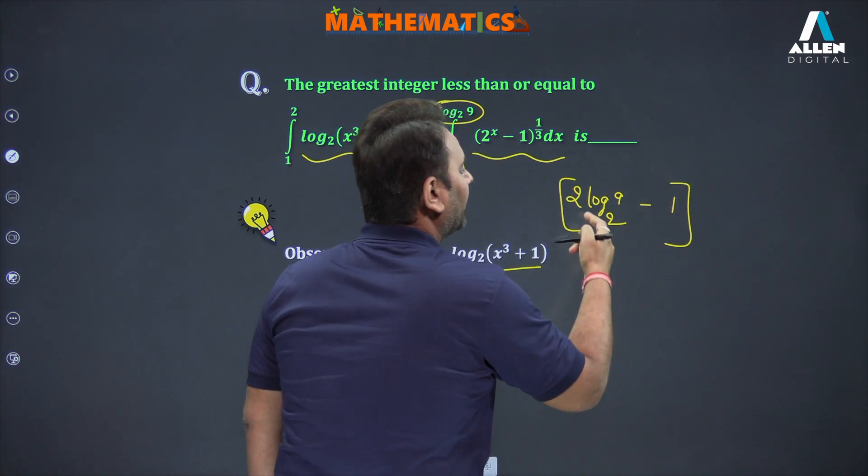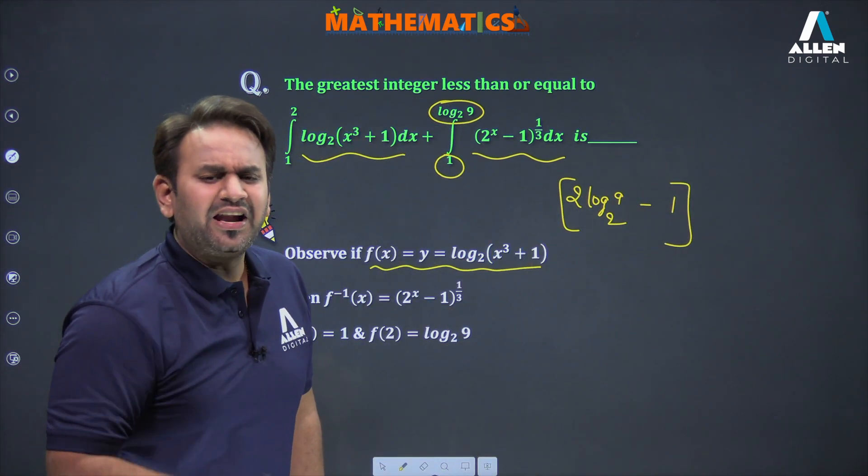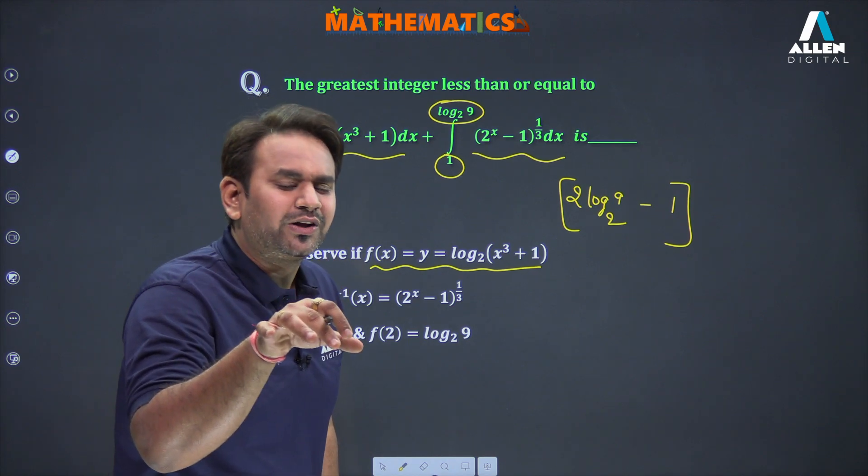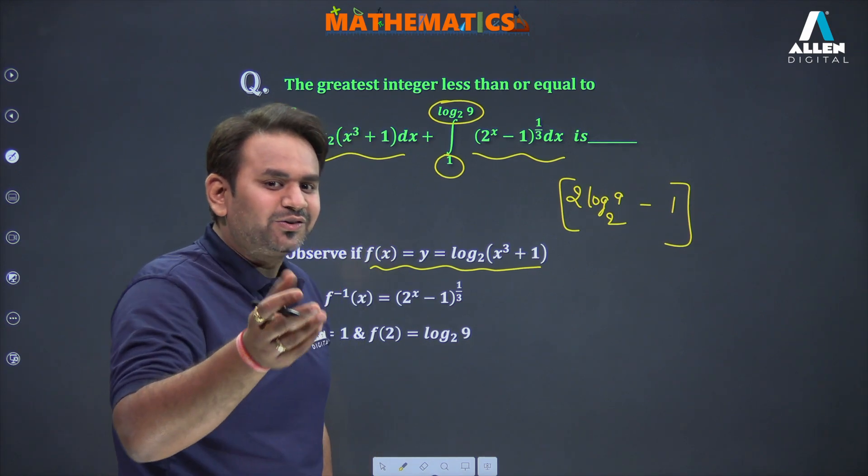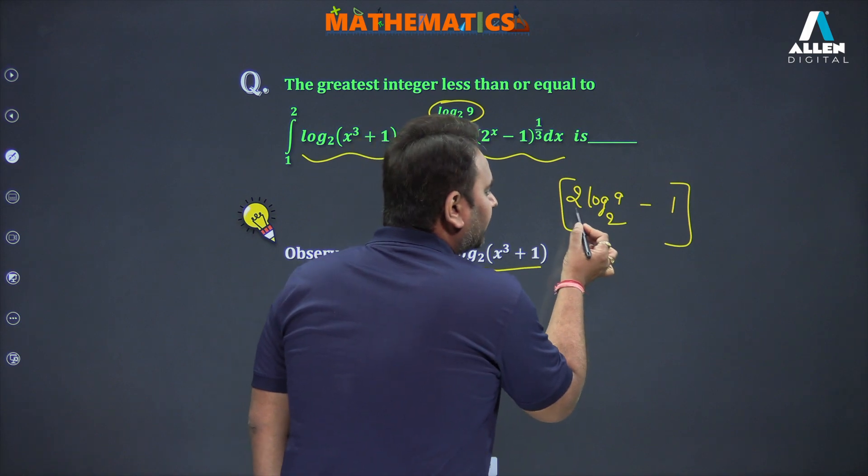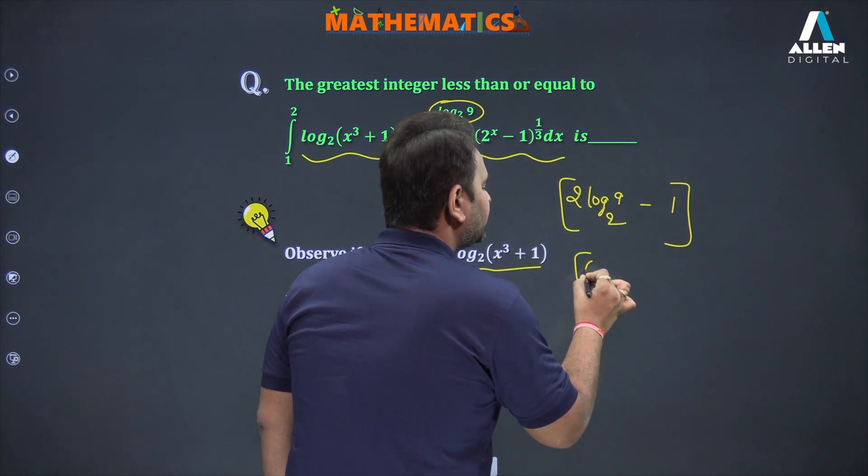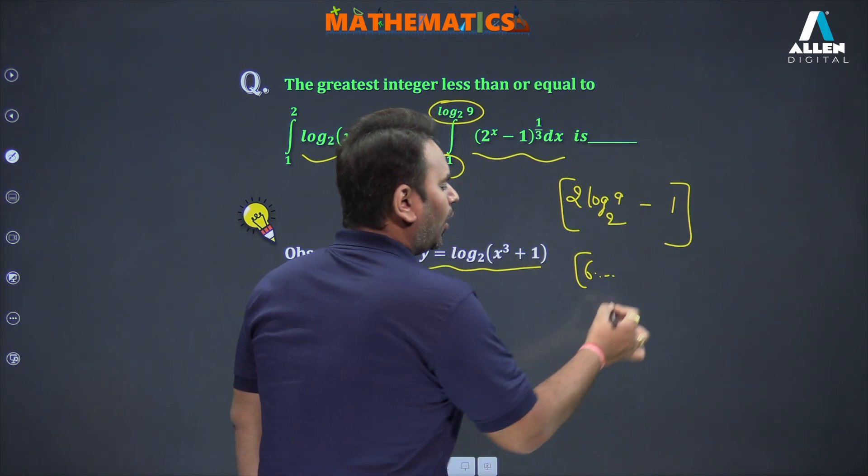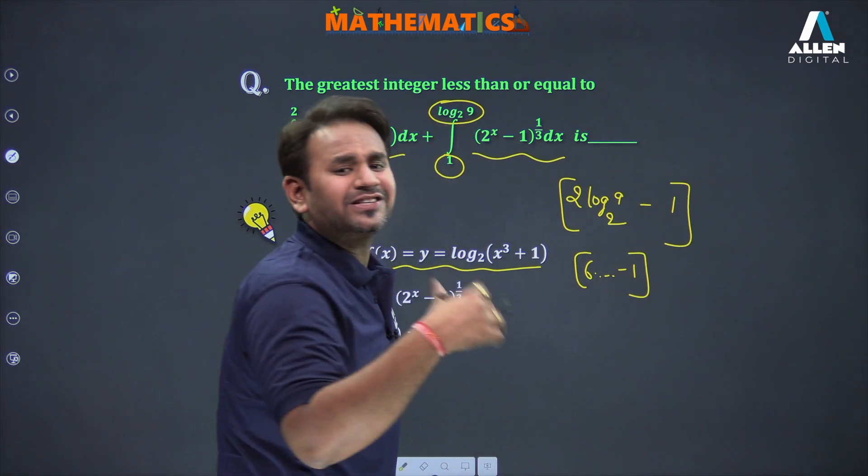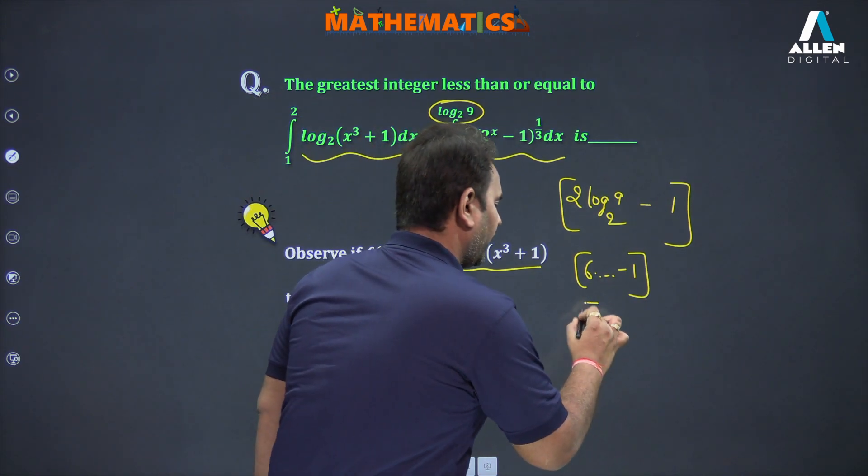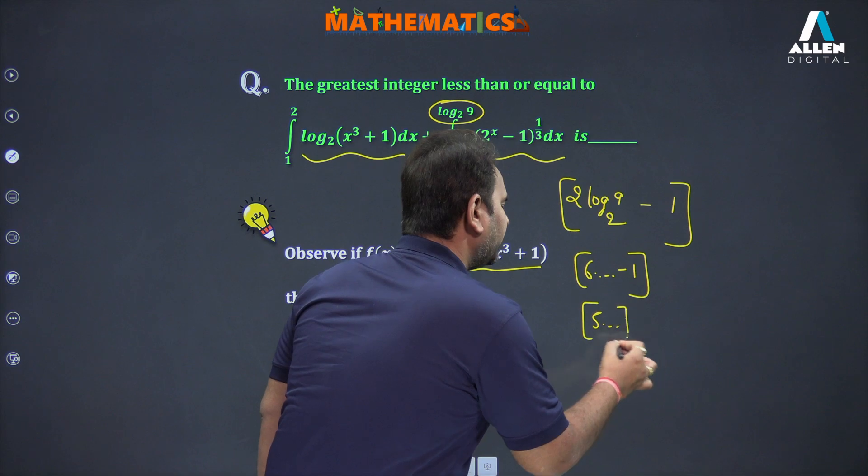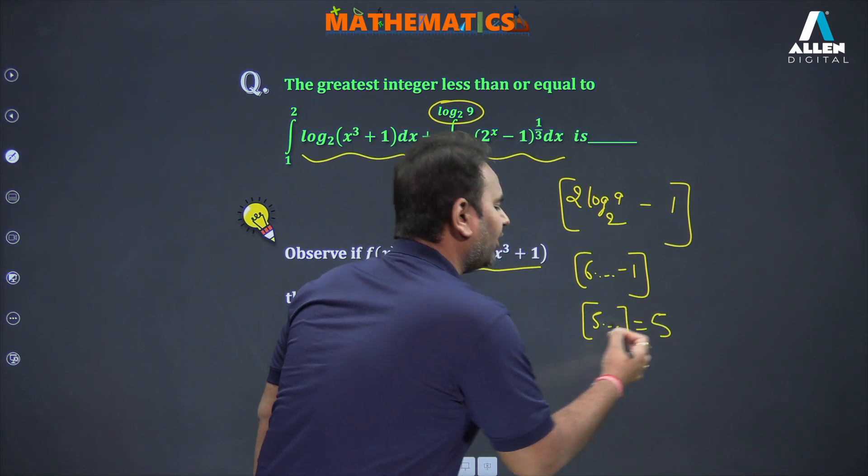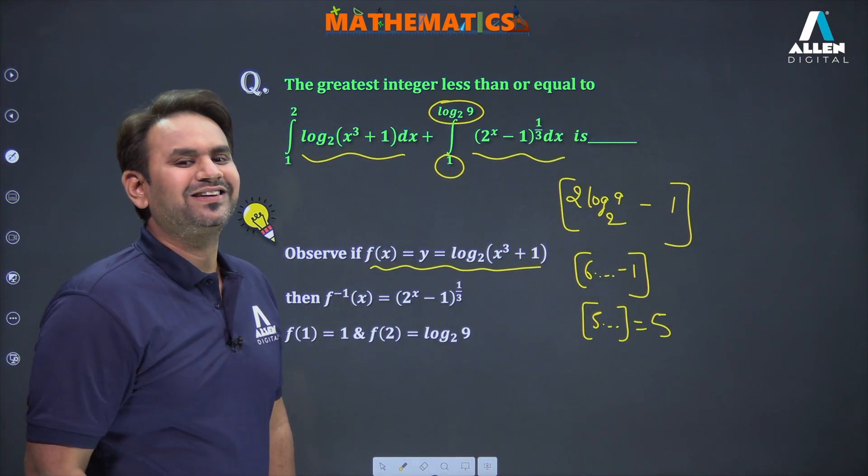We need to find the greatest integer of this. You can see log 9 to the base 2 will be approximately 3 point something, because if it were 8, the value would be 3. So it's 3 point something. 3 point something times 2 will be 6 point something, minus 1. So 6 point something minus 1 will be 5 point something, and the greatest integer of 5 point something will be 5. So the answer to this question is 5.